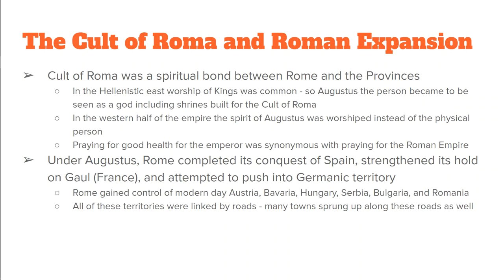Now under Augustus, Rome is going to complete its conquest of Spain. It's going to take more of Gaul and try to take what is today Germanic territory. Rome controlled Austria, Bavaria, Hungary, Serbia, Bulgaria, Romania, and it's eventually going to go into Britain as well. All these territories, except for Britain because it's across the water, were all linked by roads. These roads were very well built — the army used them to go from place to place — and there are some cities and towns in Europe today that are still using these Roman roads.